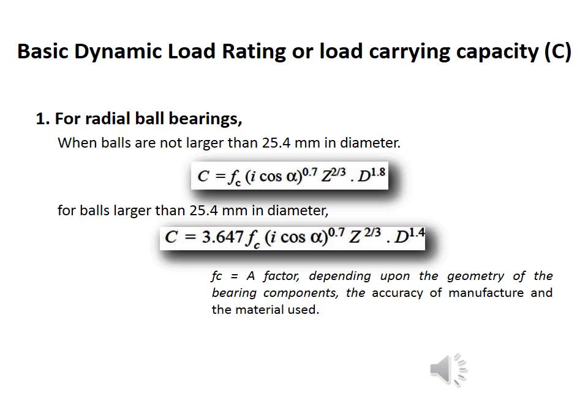In the last lecture we discussed that the life of a ball bearing is limited by fatigue failure at the surface of the balls and races. Similarly, the dynamic load carrying capacity of a bearing is also based on its fatigue life. The life of a bearing is defined as the number of revolutions or hours of service before the first evidence of fatigue, which may appear as cracks in balls or races. It has been observed that the life of a single bearing is difficult to predict.